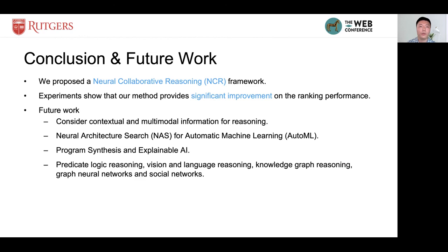Here is a summary of our work. We proposed a Neural Collaborative Reasoning framework, which models recommendation as a reasoning task by integrating logical structures and neural networks for personalized recommendation. Experiments show that our model provides significant improvements on the ranking performance.